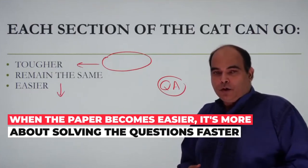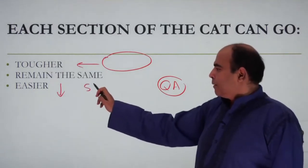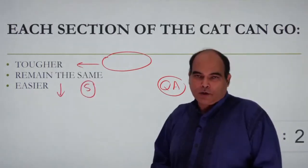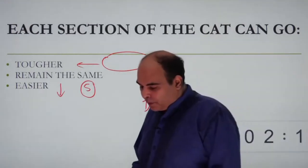Speed becomes the primary source of competitive advantage when the questions are easier. This will be true for DILR also—if the questions are easier, speed will be the source of competitive advantage.